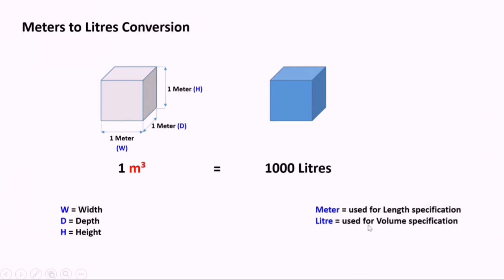Liter is the specification for volume and meter is a specification for length. So one meter cube, which is one meter width, one meter depth, and one meter height, is equal to thousand liters. That's what the metric system says. So let's cross verify this.